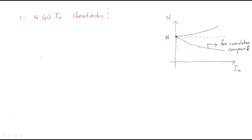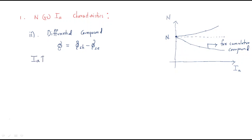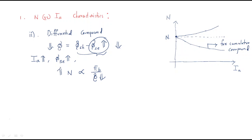Second case: differential compound motor. In a differential compound motor, the total flux is shunt minus series flux. Whenever the load current increases, the series flux also increases. When the series flux increases, the total flux (shunt minus series) decreases. Since N is proportional to Eb divided by total flux, when the total flux decreases, the speed increases.